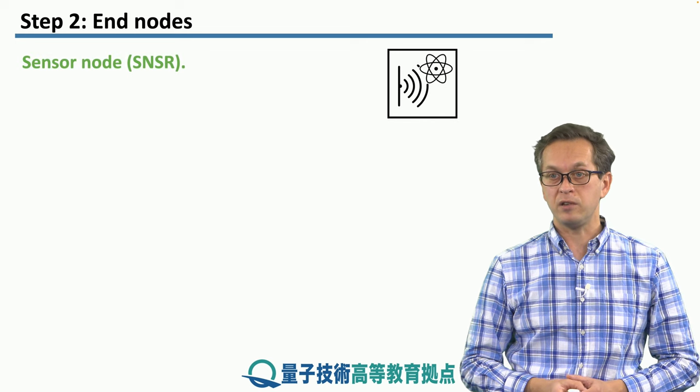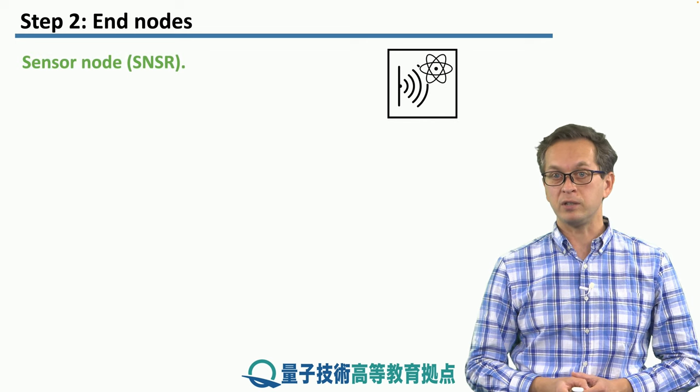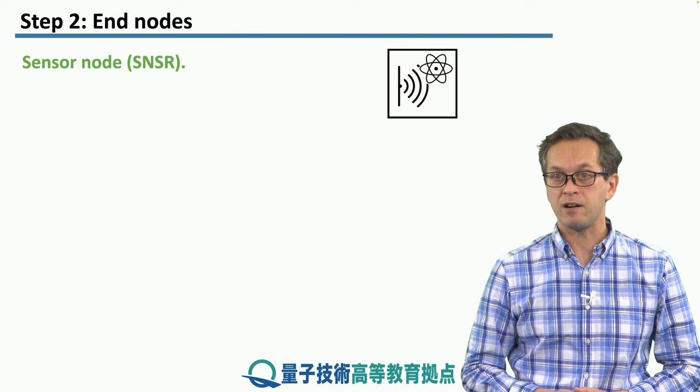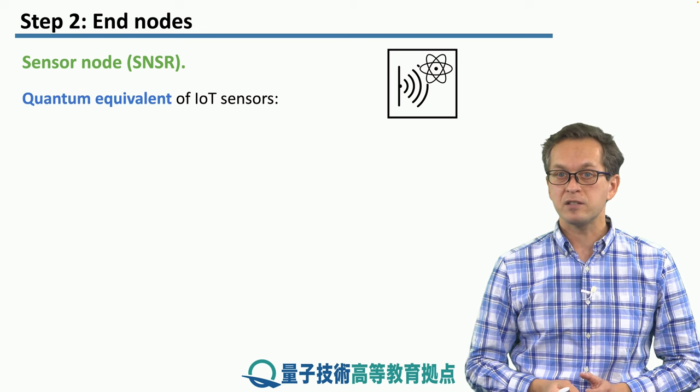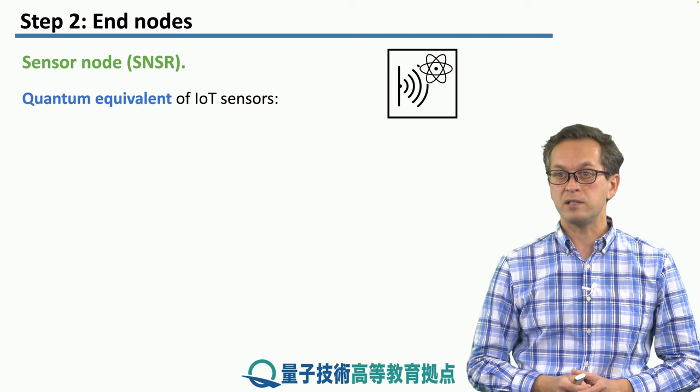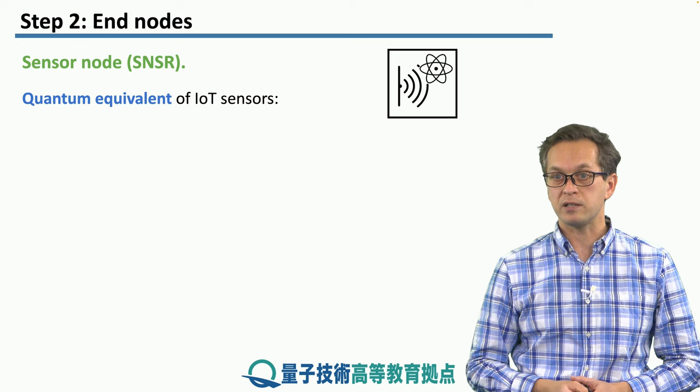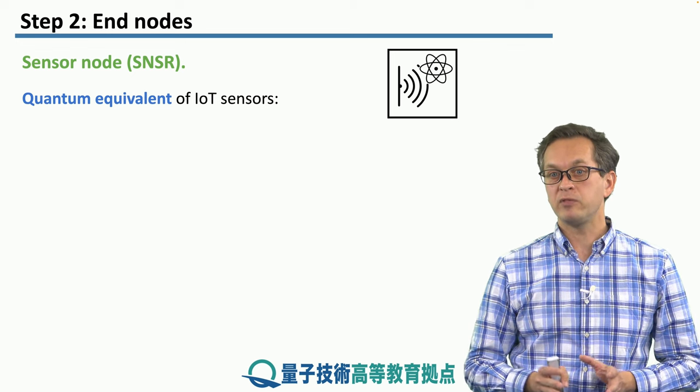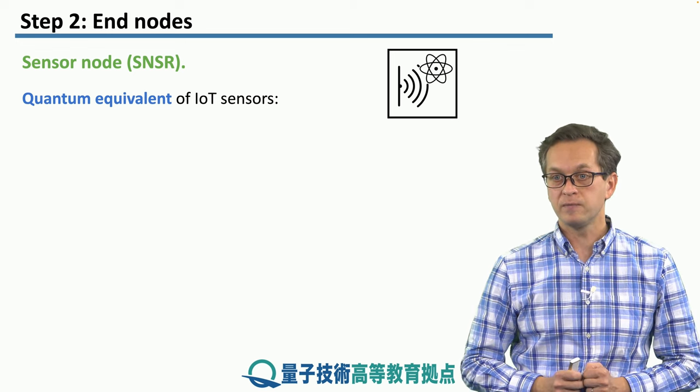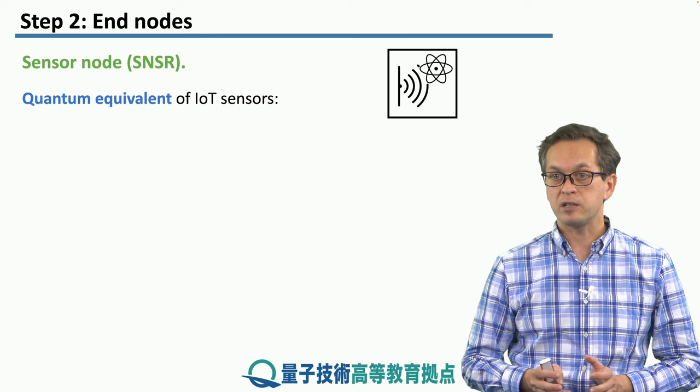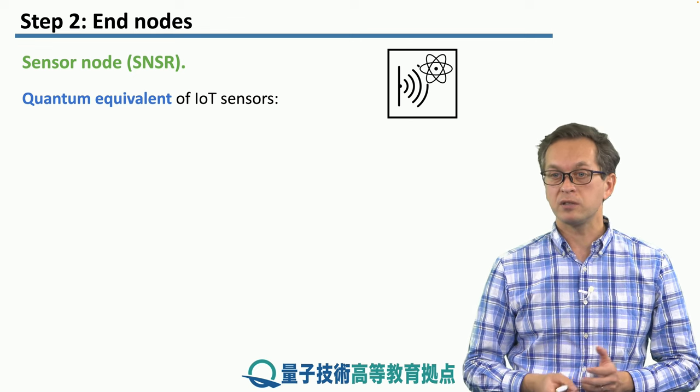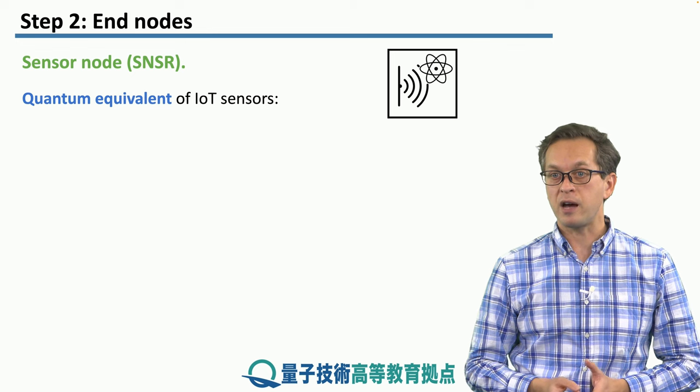Let's move on to the last end-node type that we're going to talk about, the sensor node, or SNSR. This is the sort of quantum equivalent of IoT sensors, which we see in classical internet. So this type of node is meant to accept some signal, and then do some very simple processing that's supposed to then do either some measurement, with high precision or high accuracy.